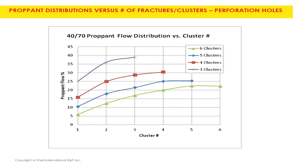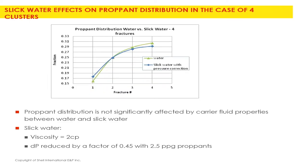This is called 4070 - about 300 micron in particle size - and this shows you what kind of distribution you would get with different numbers of perforation stages. We use this type of calculation to optimize our operation. Regarding water flow fraction: one type is called water, and the other is called slick water. In industry you can use pure water, but you typically add a polymer called slick water to reduce the drag and lower the pressure drop, saving energy from the pump.